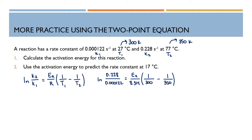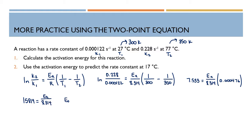Typing both sides into my calculator, I get 7.533 equals Ea over 8.314 times 0.000476, where 0.000476 is what I get from 1 over 300 minus 1 over 350. Dividing both sides by 0.000476 gives 15,819 equals Ea over 8.314, and cross-multiplying gives an activation energy of 1.32 times 10 to the 5th joules per mole.